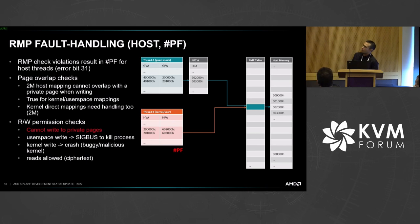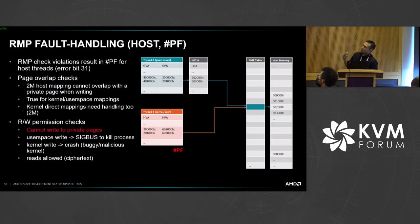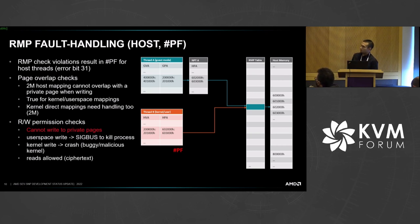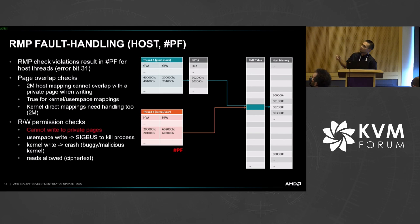For version 7, we're exploring an approach where we just flip the page back to shared if the host thinks it's supposed to be a shared page. In the case of a malicious or buggy guest that's switching pages to private out from under the host, that's undefined behavior, so it's okay if the guest breaks in that case. However, we need to watch out for the case where the host flips the page to shared by mistake — that's a host bug and we don't want to silently corrupt guest memory. Because of how SNP handles things, if we flip the page to shared and the guest is expecting it to be private, the validated bit in the RMP table will be unset, so the guest will get a #VC exception and terminate itself.